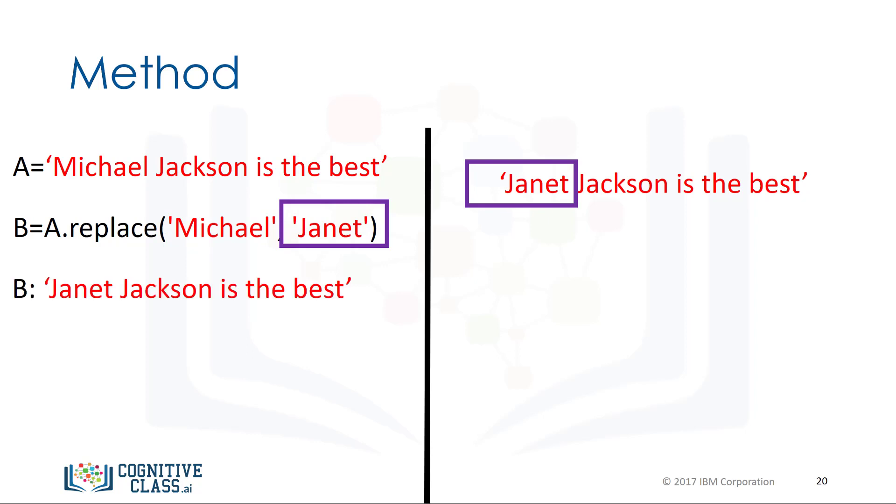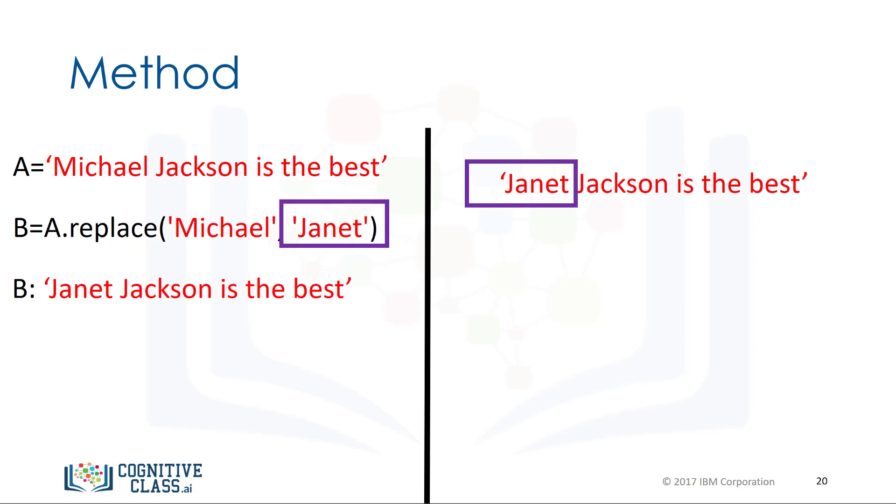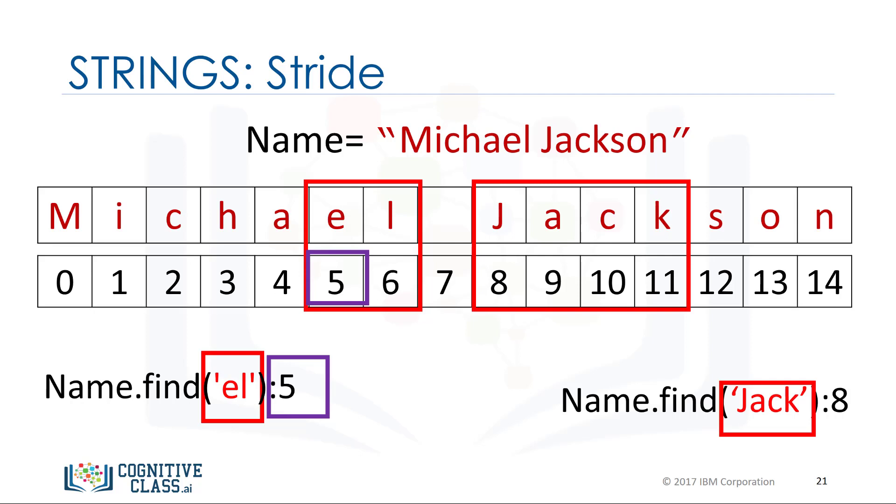The method find finds substrings. The argument is the substring you would like to find. The output is the first index of the sequence. We can find the substring jack.